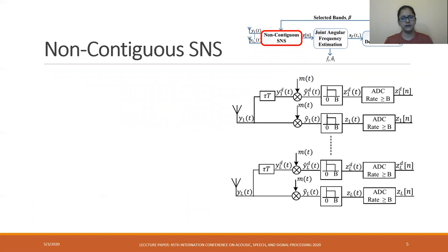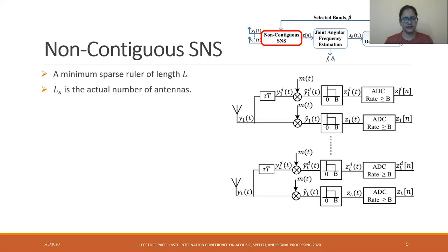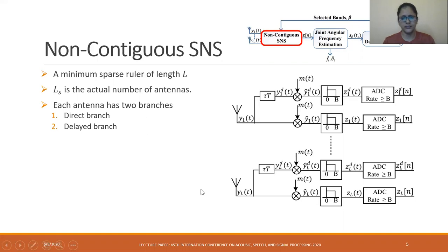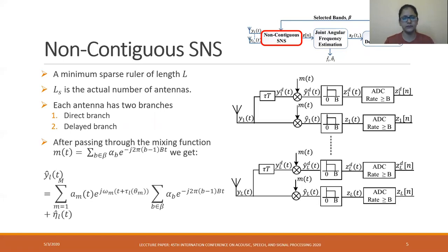Now we'll discuss every block of the proposed method. The first block is the non-contiguous sub-Nyquist sampling block. Here we consider a sparse antenna array, so the minimum sparse ruler of length L is used, where Ls is the actual number of antennas. Each antenna has two branches: one is the direct branch and another is the delayed branch. The branch without any element is the direct branch and the branch having the delay element is the delayed branch.